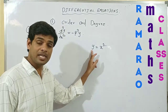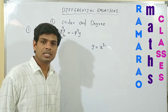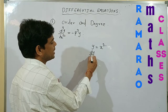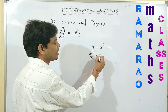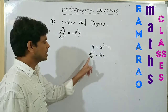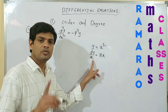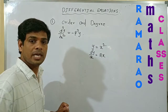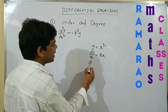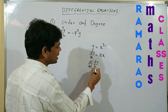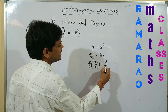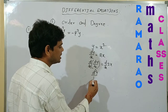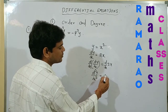Here y is the dependent variable and x is the independent variable, with y = x². Now differentiate with respect to x: dy/dx = d/dx of x² = 2x. Here dy/dx means the first order derivative. Again differentiating: d/dx of dy/dx = d/dx of 2x, which gives d²y/dx² = d/dx of 2x.